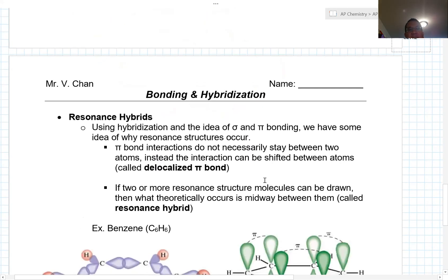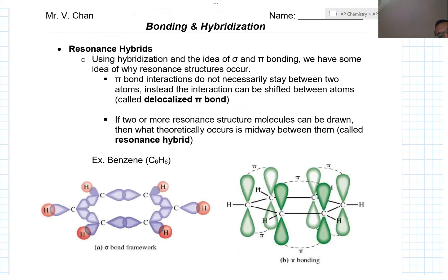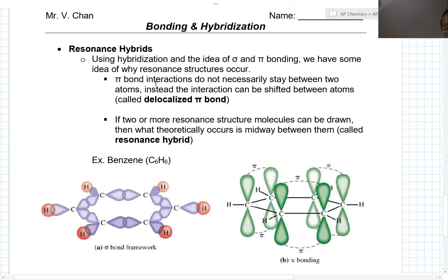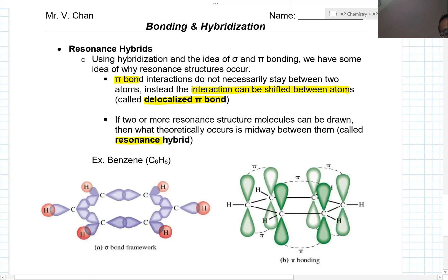Using hybridization and the idea of sigma and pi bonds, we have some idea of why resonance structures occur. Remember, a resonance structure is when there's more than one way to draw a structure because the double bond is moving. The pi bond interactions do not necessarily stay between two atoms — instead, the interaction can be shifted between atoms. This is called delocalization. If two or more resonance structure molecules can be drawn, then what theoretically occurs is midway between them, called the resonance hybrid.